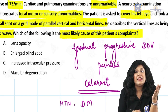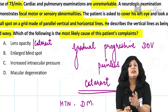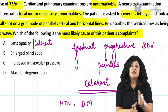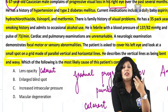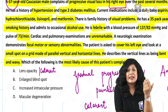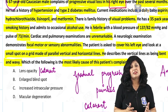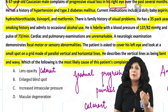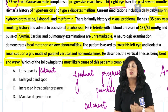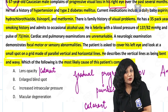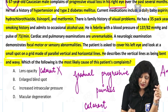Option 1 is lens opacity, meaning cataract. Though cataract can also cause gradual painless progressive diminution of vision, there is nothing else here suggestive of cataract. There is no mention of colored halos, frequent change of glasses, or glare. No slit-lamp examination is described. For diabetic cataract, we would expect uncontrolled diabetes and snowflake cataract. Instead, the macular function test is showing a wavy pattern, suggesting macular pathology — so this is most probably not cataract.